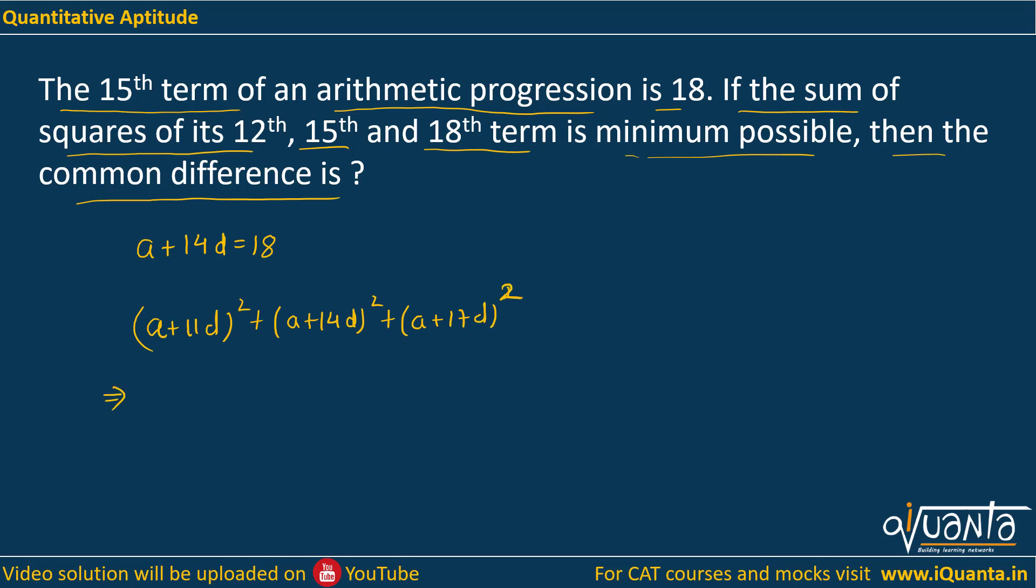So one way to do this is we can replace the value of a. We can put a equals to 18 minus 14d in all these brackets, and then we will have an equation in terms of d only. So if you go by this way, you will be getting 972 plus 18d².